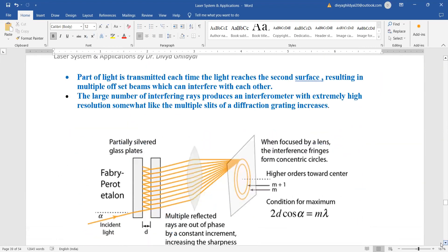Part of light is transmitted each time the light reaches the second surface. The large number of interfering rays produces an interferometer with extremely high resolution, somewhat like the multiple slits of a diffraction grating increases.